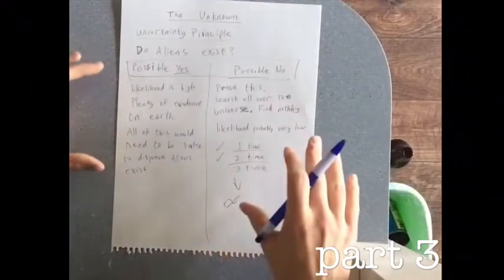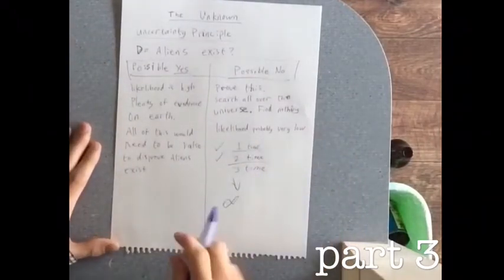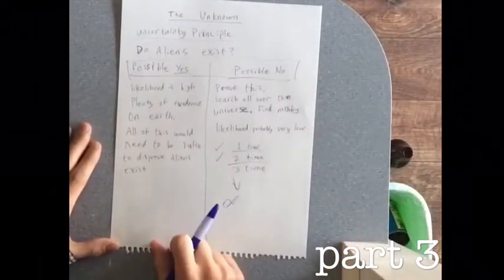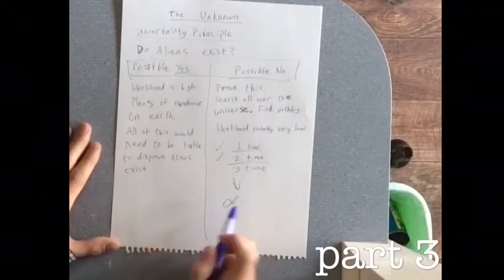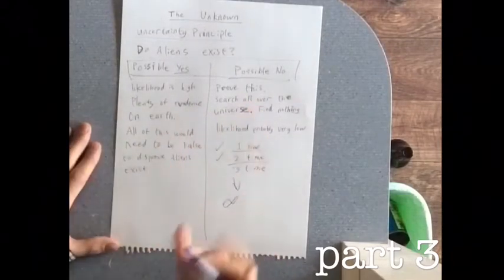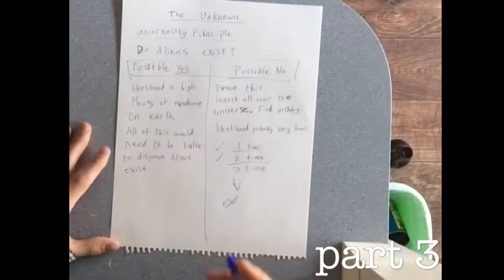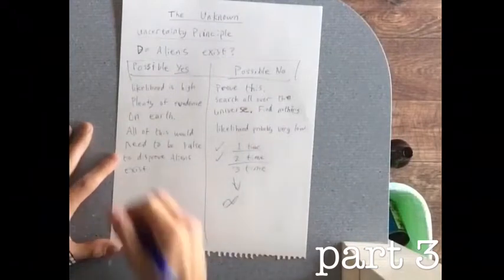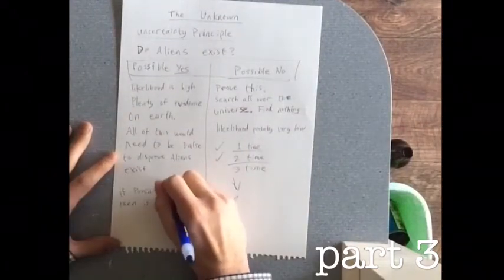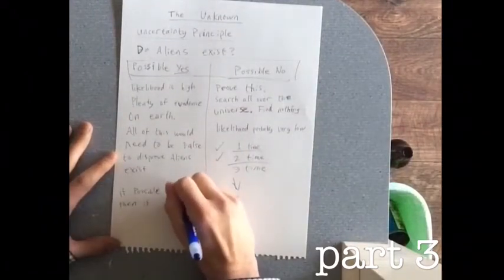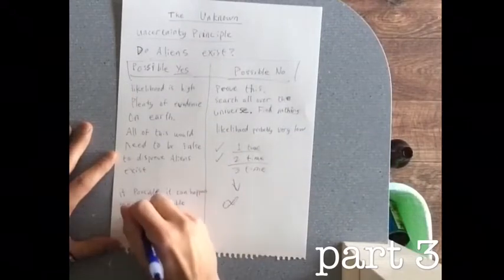Just because of this train of thought, I don't even have to look at or talk to an alien to know. The possibilities are both here, but the probabilities — that's what really makes reality. If something is possible, then it can happen. If probable, it will happen.